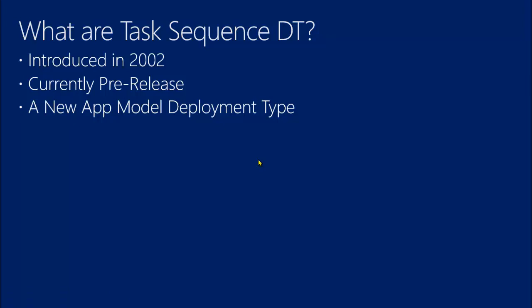So what are task sequence deployment types? These were introduced in Configuration Manager 2002. They are currently pre-release — they were in 2002 and still are in 2006. Essentially, a task sequence deployment type is a new application model deployment type, just like you could have a script deployment type or an MSI deployment type. Now there's one that is a task sequence deployment type, and it supports all of the things you would expect in an application model.